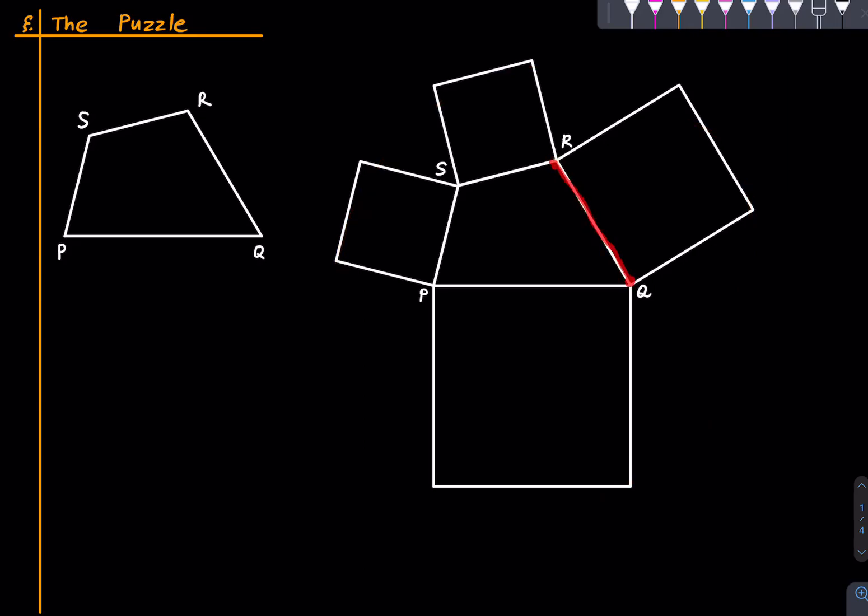On each side erect a square outside of that quadrilateral. So on this side RQ we erect this square, on RS we have this square, and similarly we have these four squares. Then locate the centers of these squares. This point is the center of this square, and similarly we will get other centers. Call them A, B, C and D.